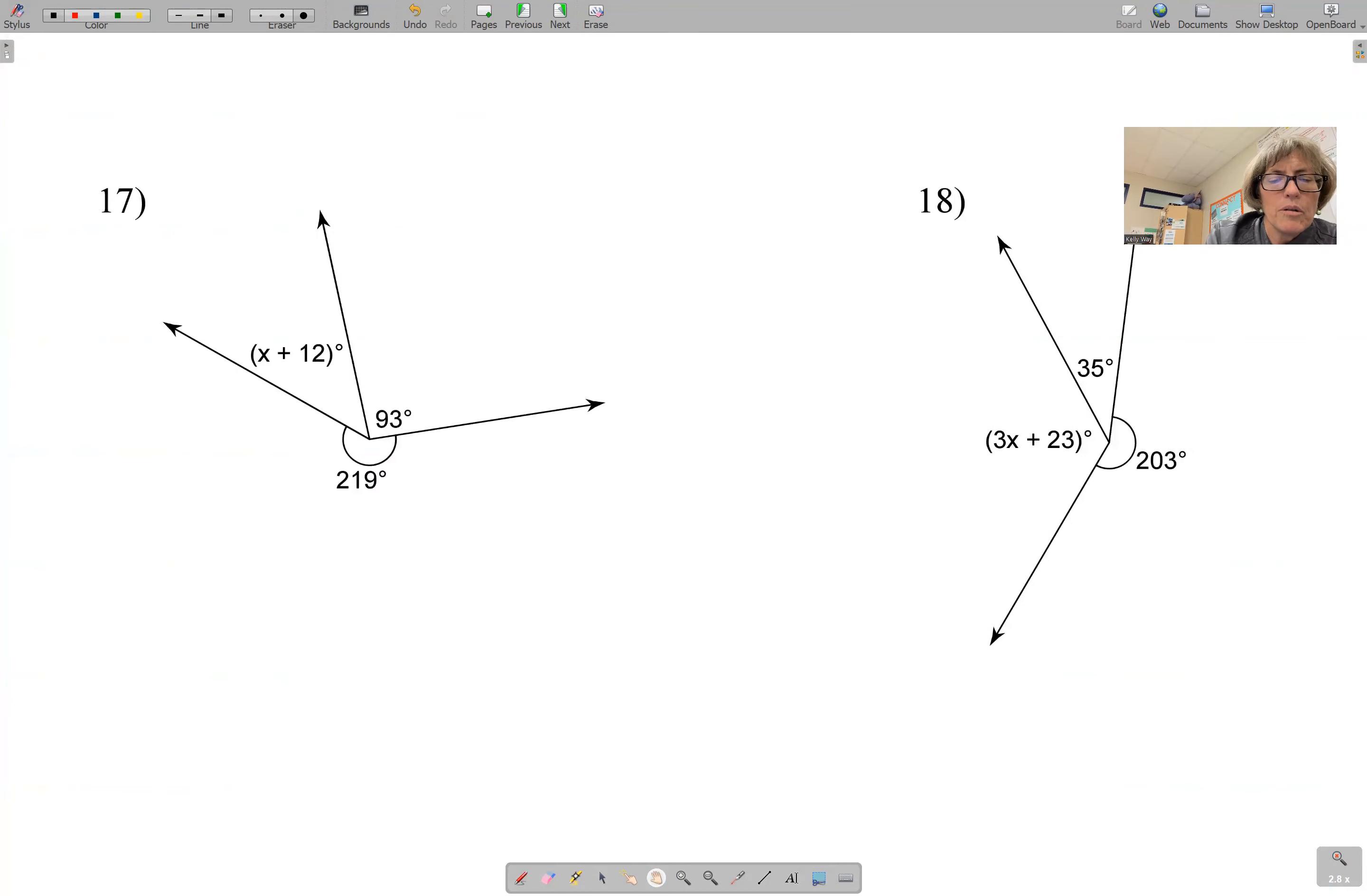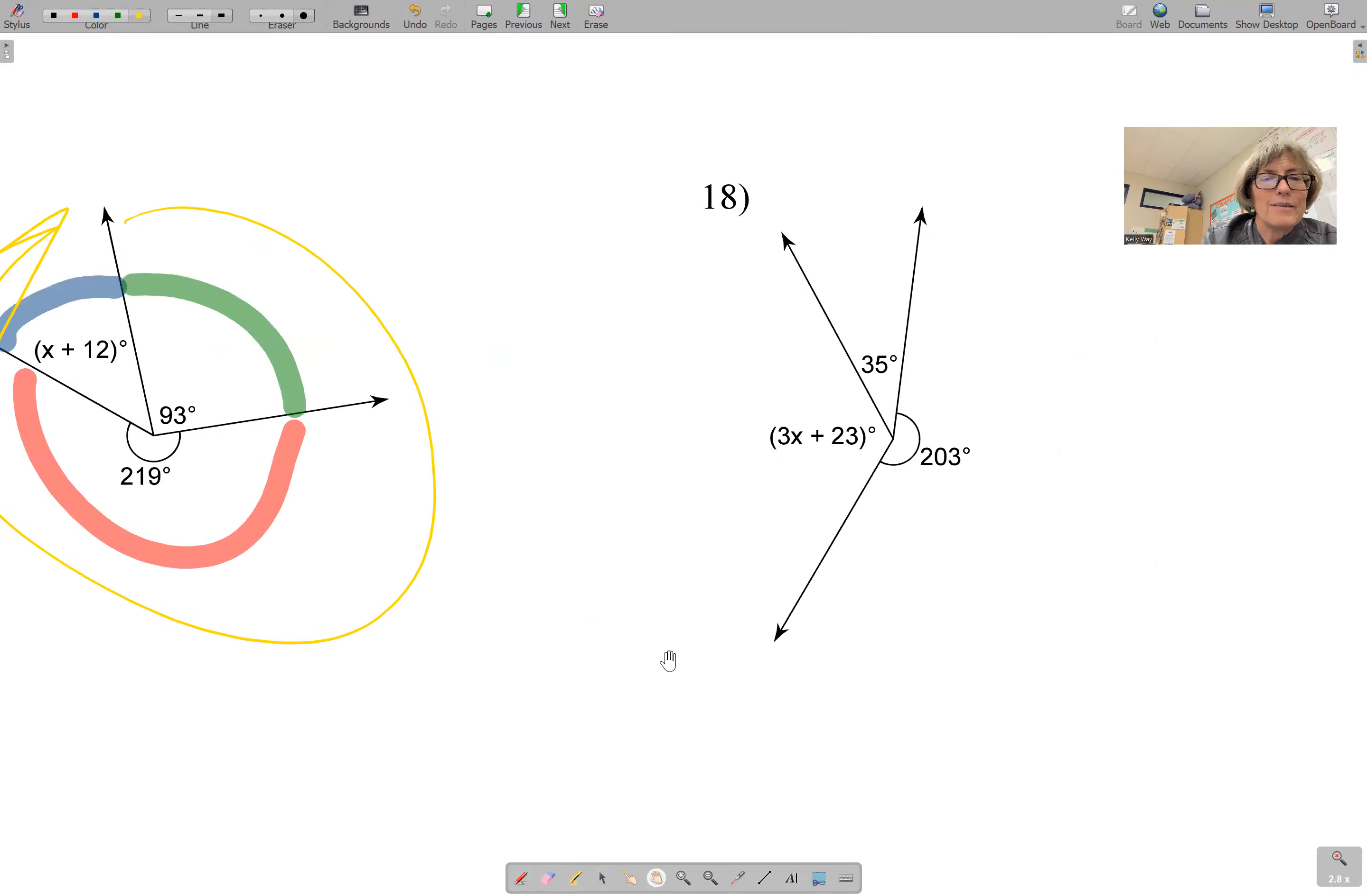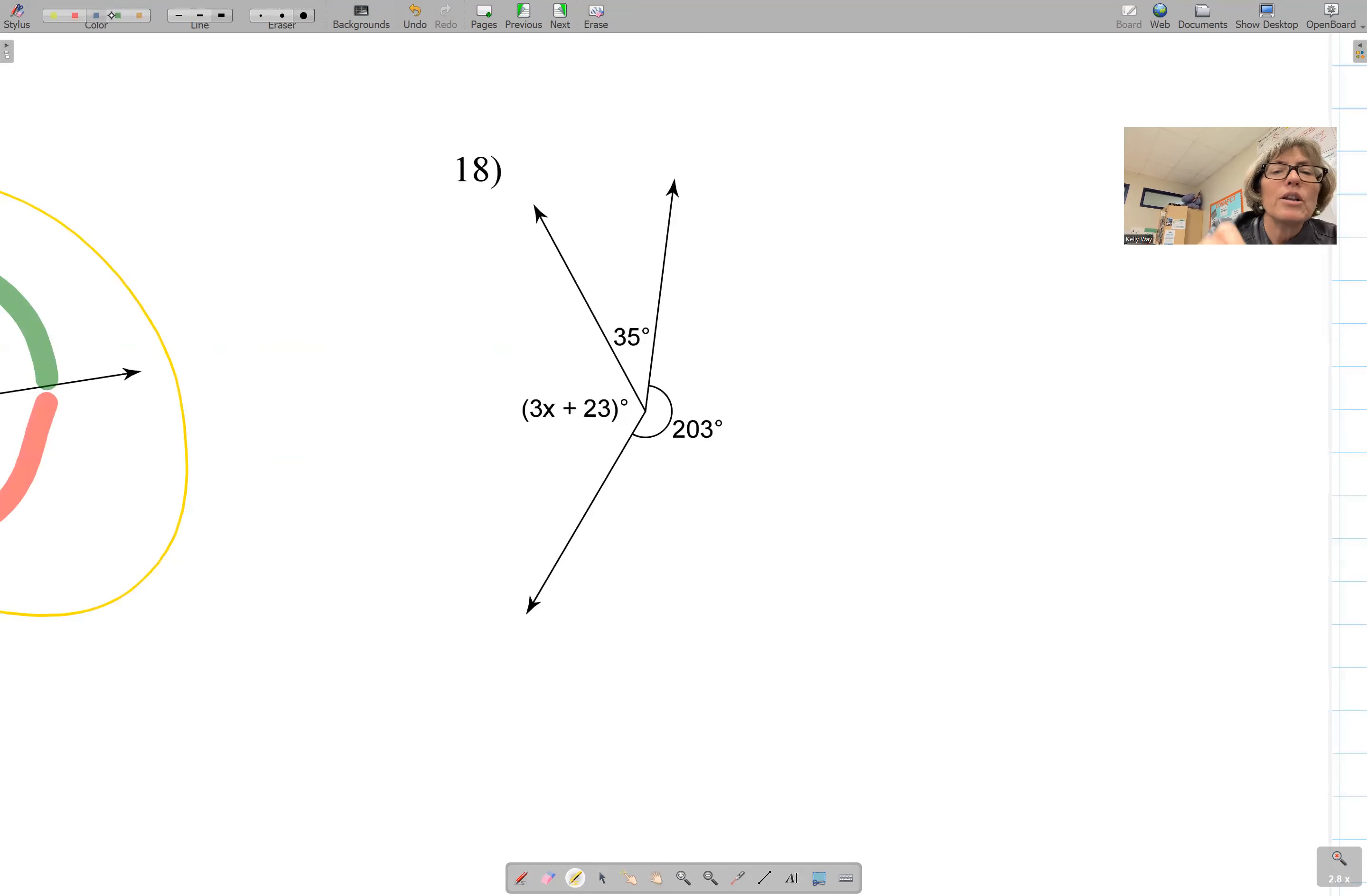You can look here. We have an angle here. Trace. Angle here. An angle here. Ask yourself what you know is true. Over here. Take a look. Angle. Trace. Angle. Trace. Angle. Ask yourself what you know is true in that diagram.